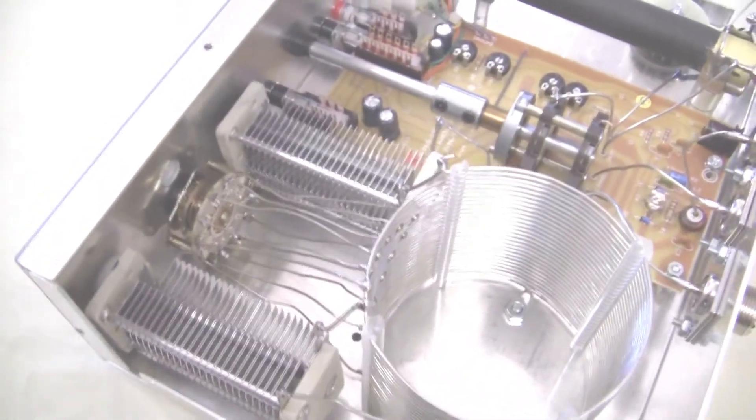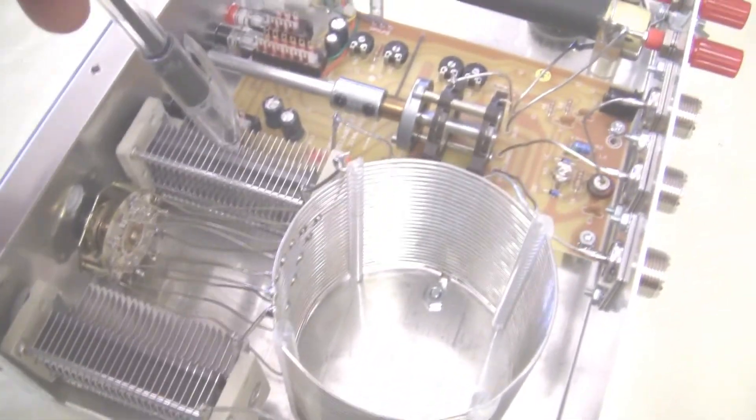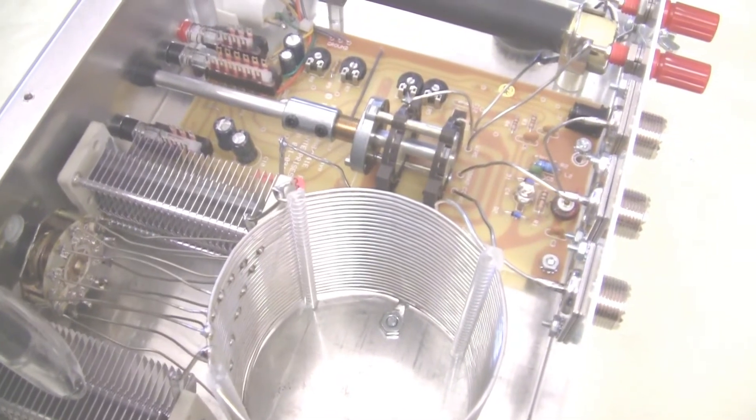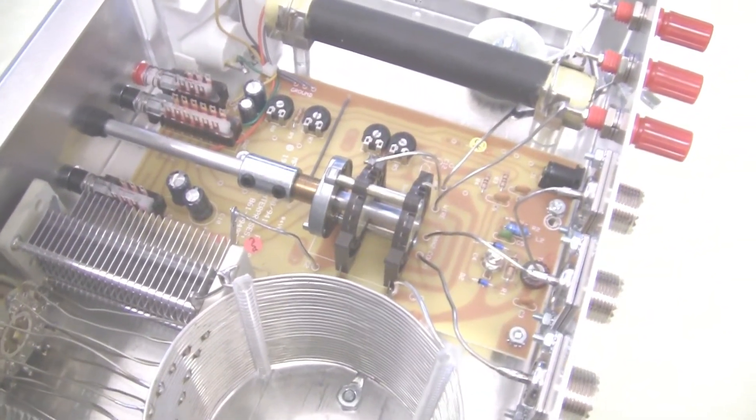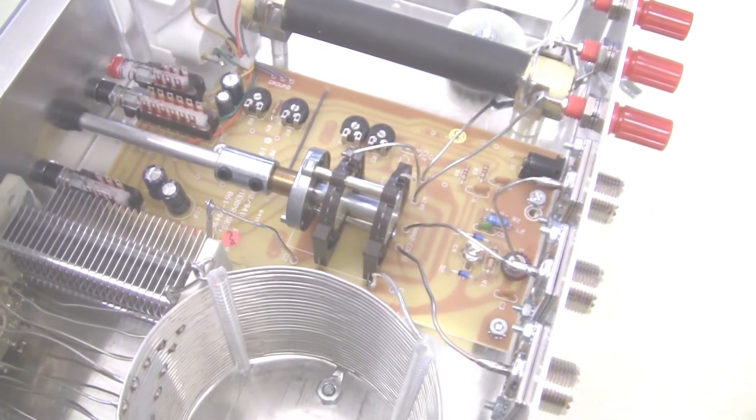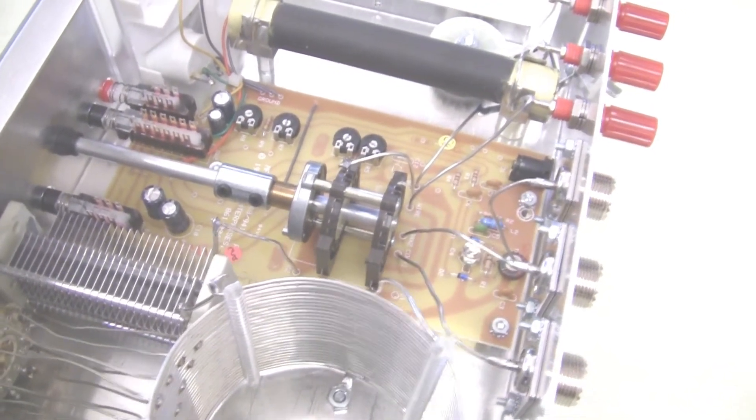The T tuner, which is the actual tuner itself. Here are the two capacitors, and they're variable capacitors of course. On the front panel, at zero you have maximum capacitance. At 10, you have minimum. So put them around five to start with.